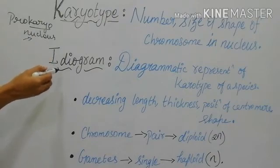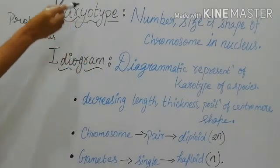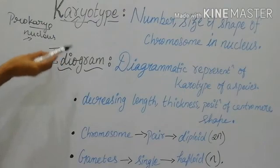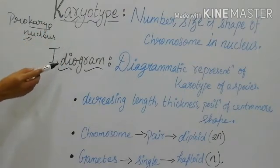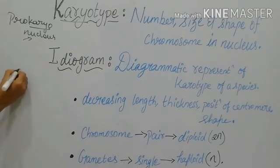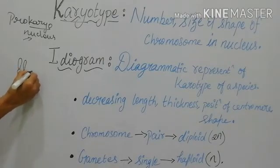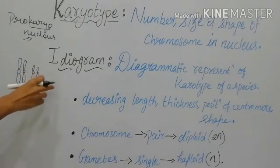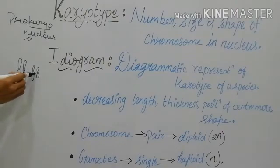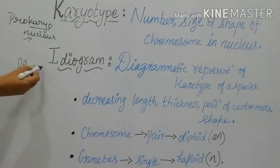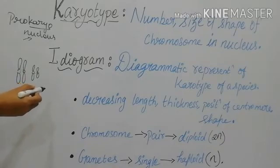An ideogram is the diagrammatic representation of the karyotype. A diagrammatic representation of the karyotype of a species is called the ideogram, where chromosomes are arranged in decreasing length — the tallest at the top, with length gradually decreasing — and also arranged based on thickness, position of centromere, and shape of chromosomes.